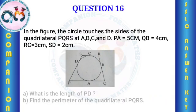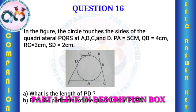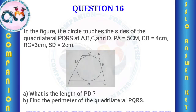In the figure, the circle touches the sides of the quadrilateral PQRS at A, B, C and D. PA equals 5, QB equals 4, RC equals 3 and ST equals 2 cm. Find the length of PD and the perimeter of the quadrilateral PQRS.